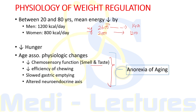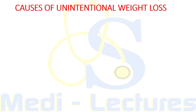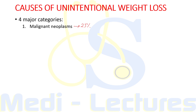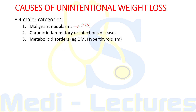Coming on to the causes of unintentional weight loss, most causes belong to one of four major categories: malignant neoplasm, which is responsible for around 25% of cases; chronic inflammatory or infectious diseases; metabolic disorders like diabetes mellitus and hyperthyroidism; and finally psychiatric disorders. Many times, a combination of these factors can be responsible.